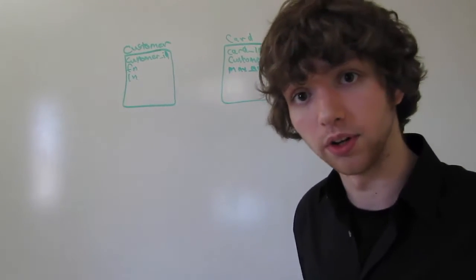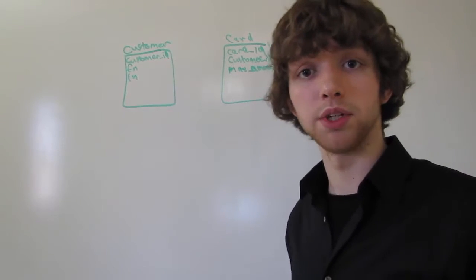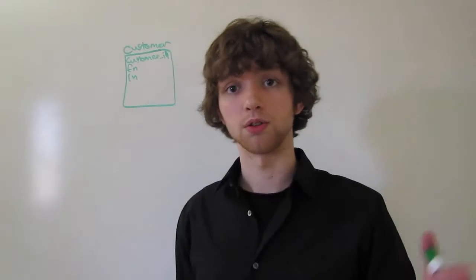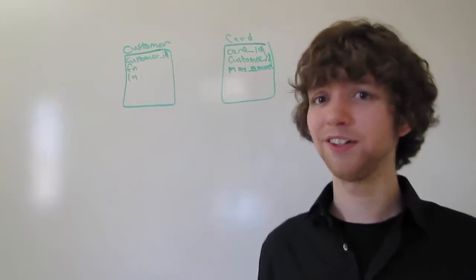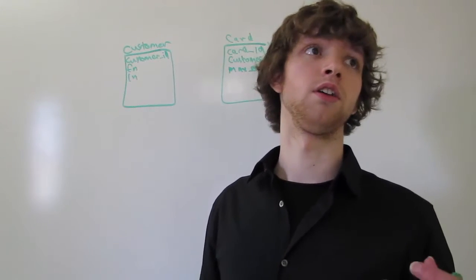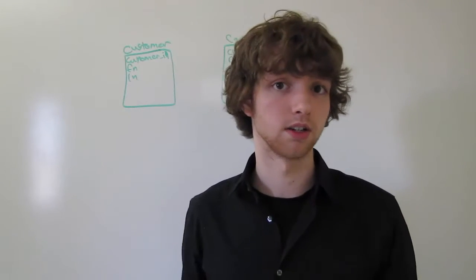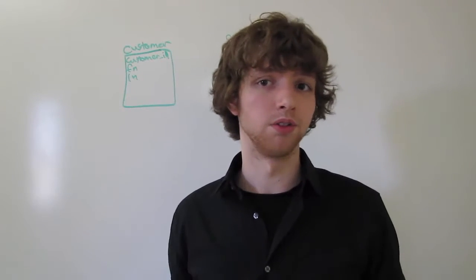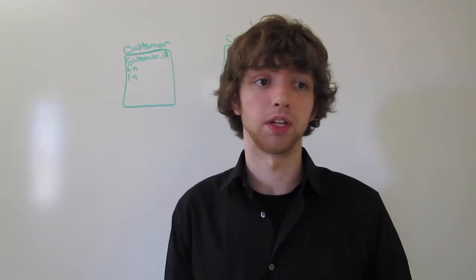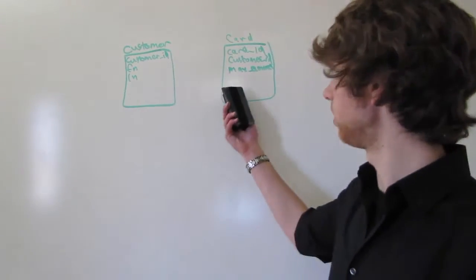Let's throw another table into this equation — it's going to be a card type table. You know when you get a credit card? That card has a type, such as Visa, MasterCard, American Express, or whatever else. That's kind of like the card type. Generally a bank would give out one card type, but we could say what kind of card type the card in this table is.